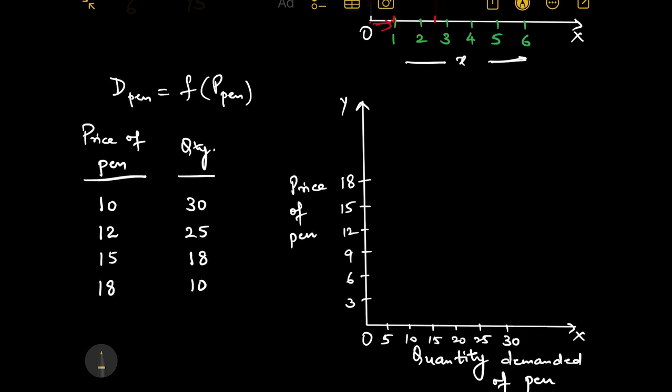Now, how will we plot this? Price of pen is 10, the quantity I will buy is 30. So, where is my 10? 10 is somewhere here. I am planning to buy 30 somewhere here. This would be my first point.